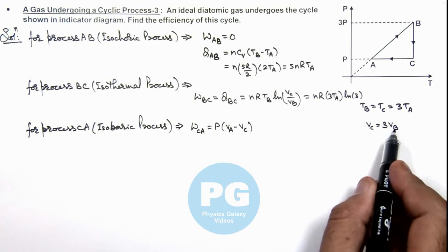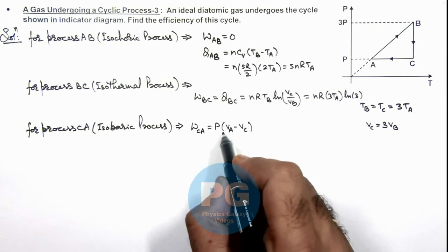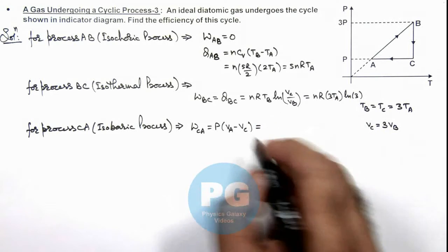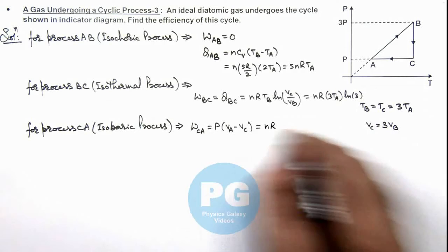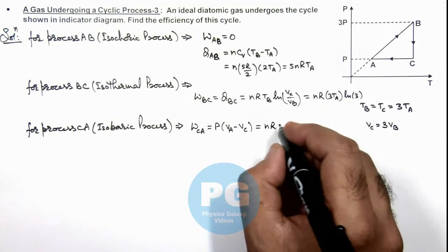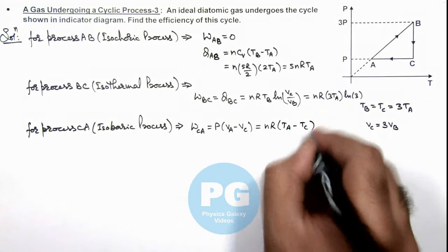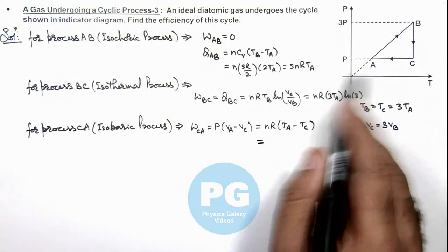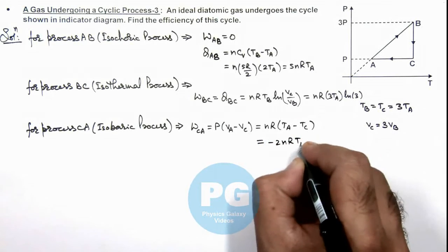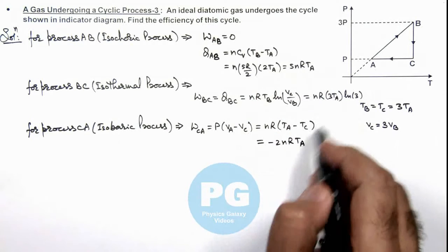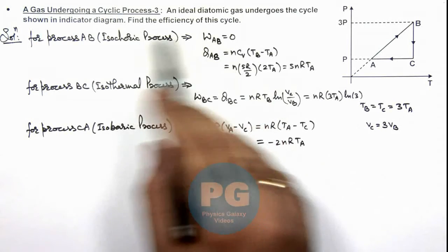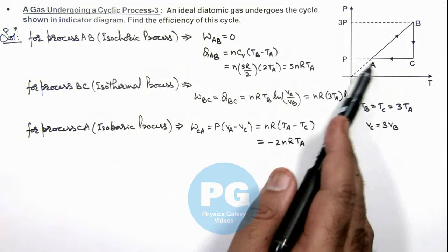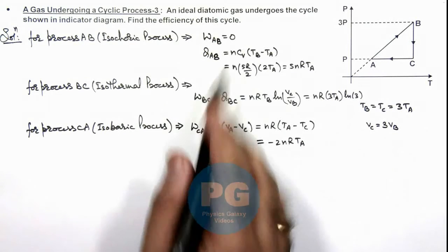So in this situation, rather than calculating volume at state A, we write it in terms of temperature. As PVA we can write as nRTA, and PVC is nR, so that can be written as TA minus TC. If we substitute the value of TC over here, which is 3TA, the work done we are getting in the process CA is minus 2nRTA. You can see all values we are transforming in terms of TA, so that when we take the ratio of work to heat supplied for efficiency, TA gets cancelled out. Now as we have got these values, we don't need to calculate the heat supplied in CA, as it is negative or it is rejected, which is not required for calculation of efficiency.